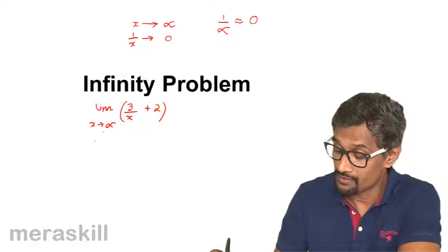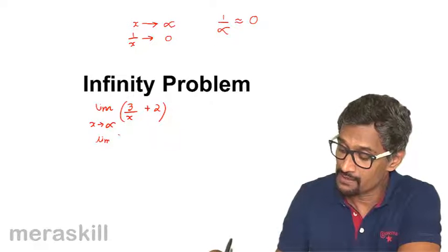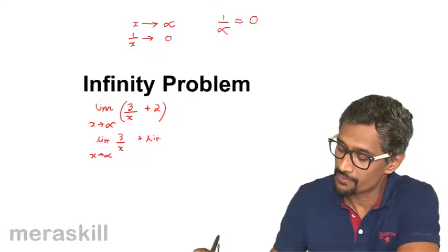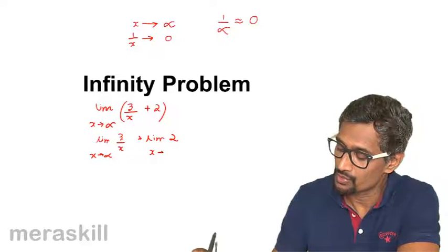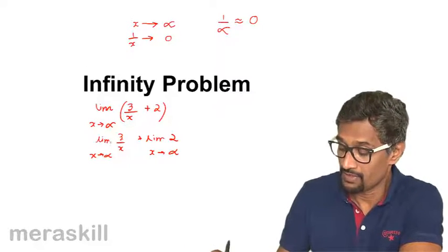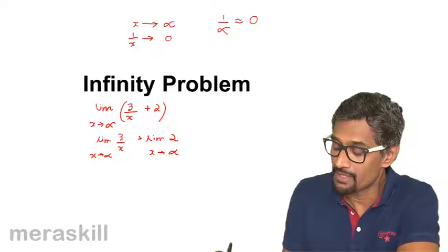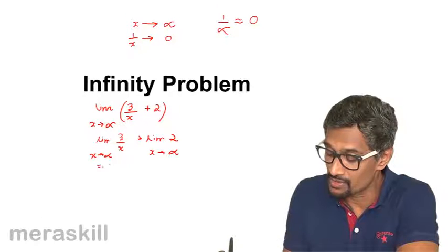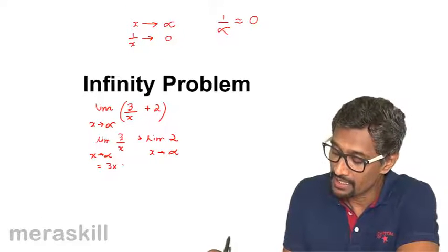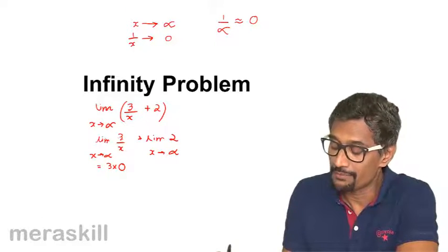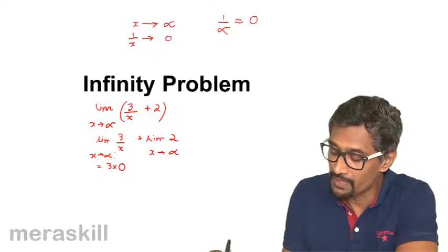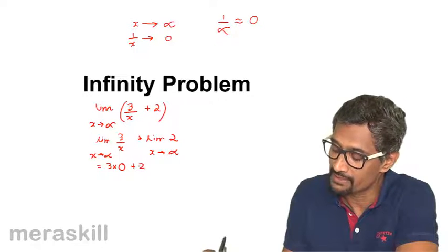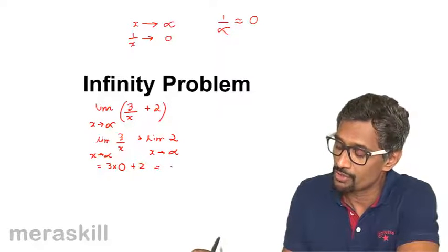Now this means you can split this up as limit of 3 by x as x approaches infinity plus limit of 2 as x approaches infinity. Now this means that it is limit of 3 by x, now 1 by x itself will tend to 0. So this will give you 3 into 0, because this is the same as saying 3 into limit of 1 by x as x tends to infinity. The limit of a constant function will always remain the same. So it's going to be 3 into 0 plus 2.